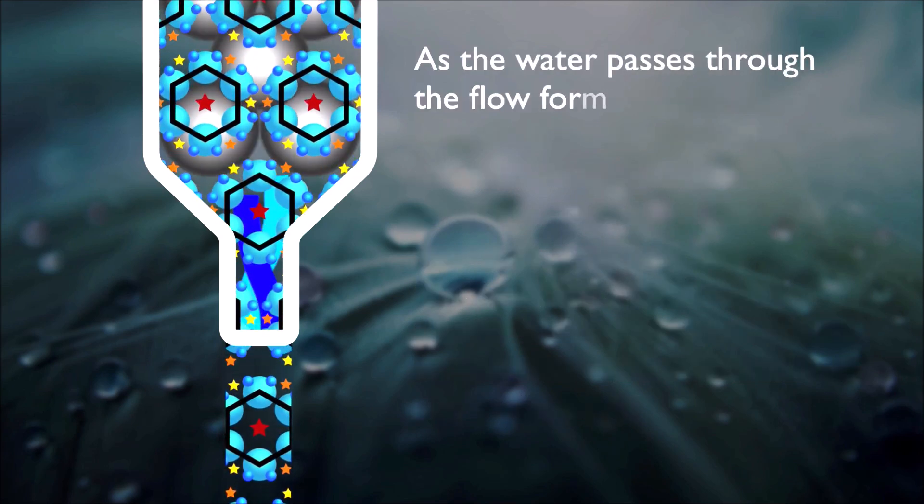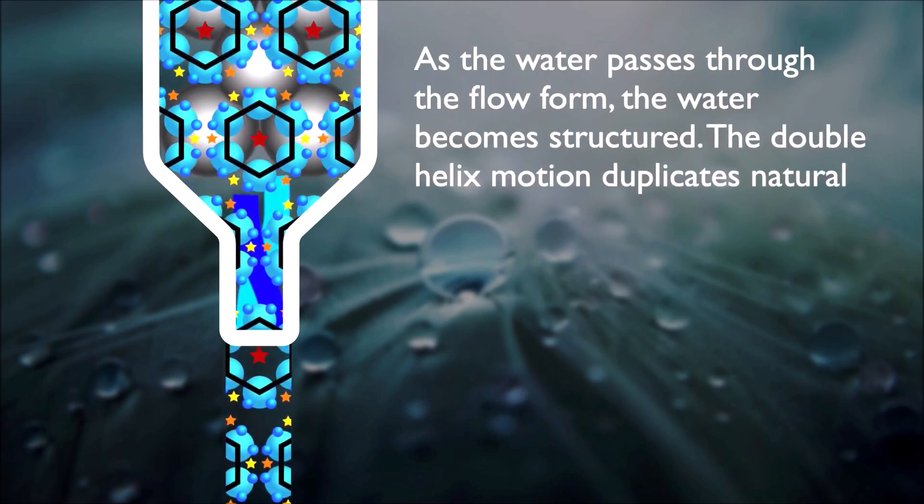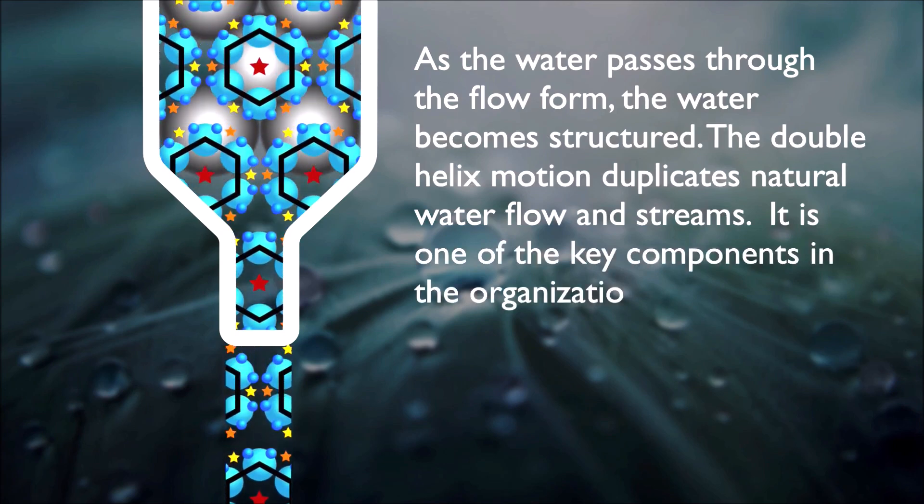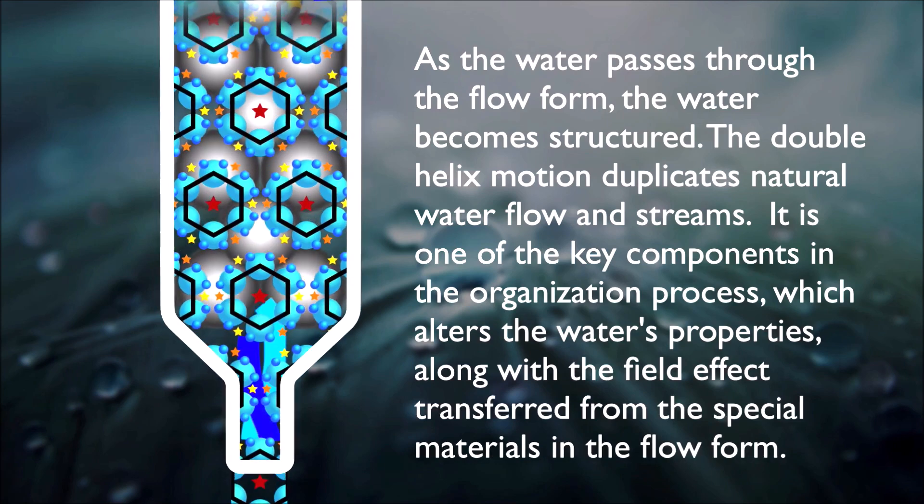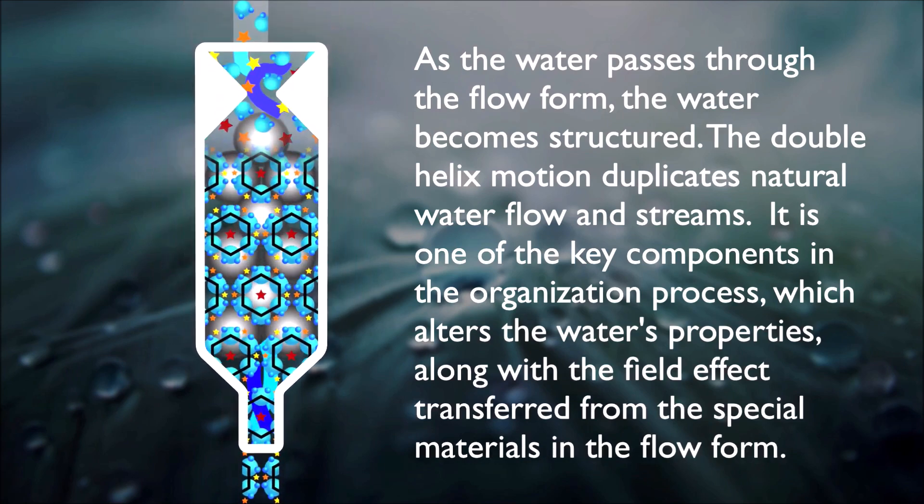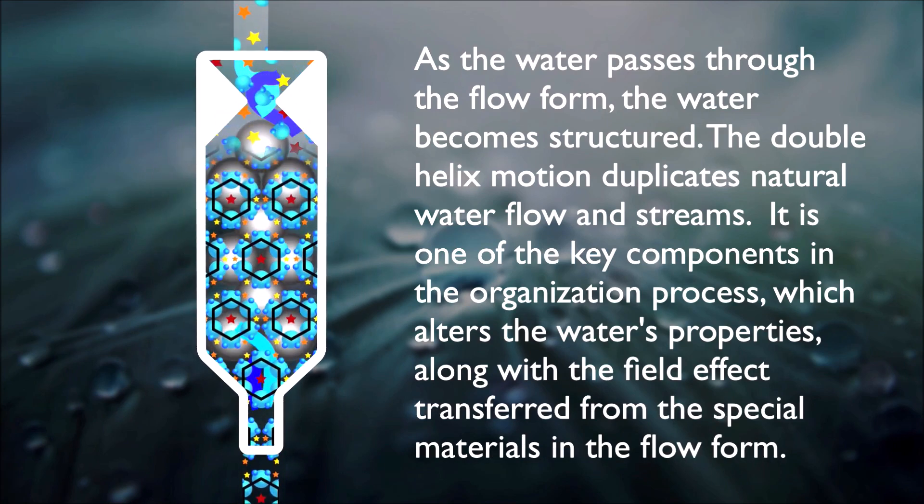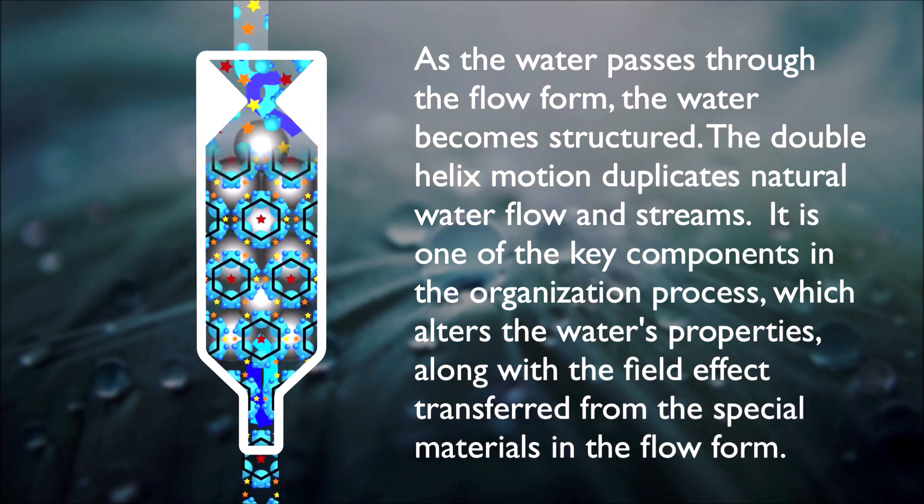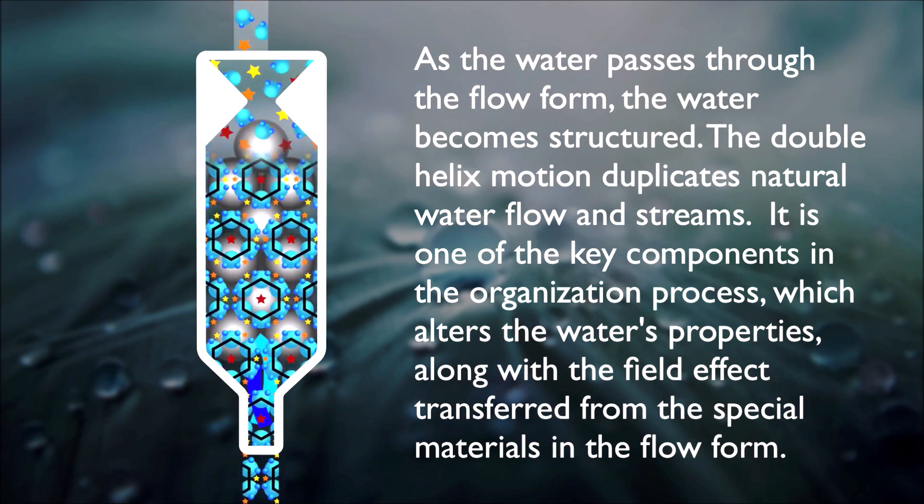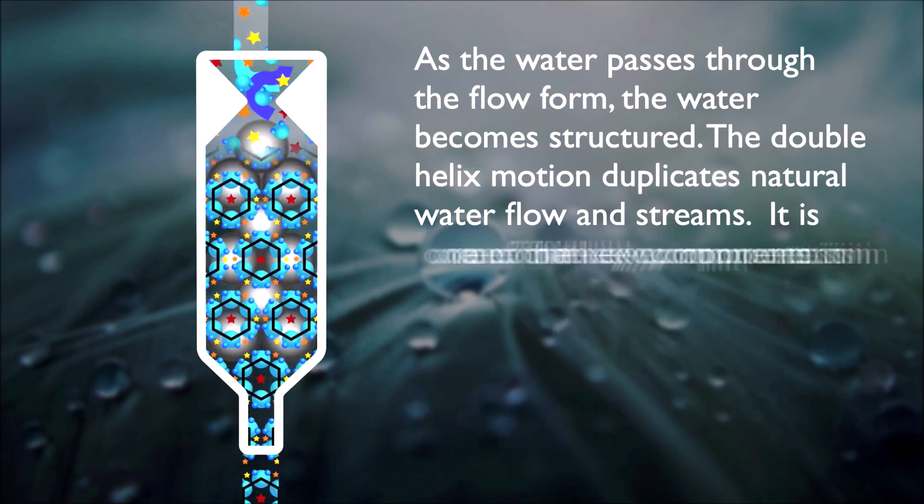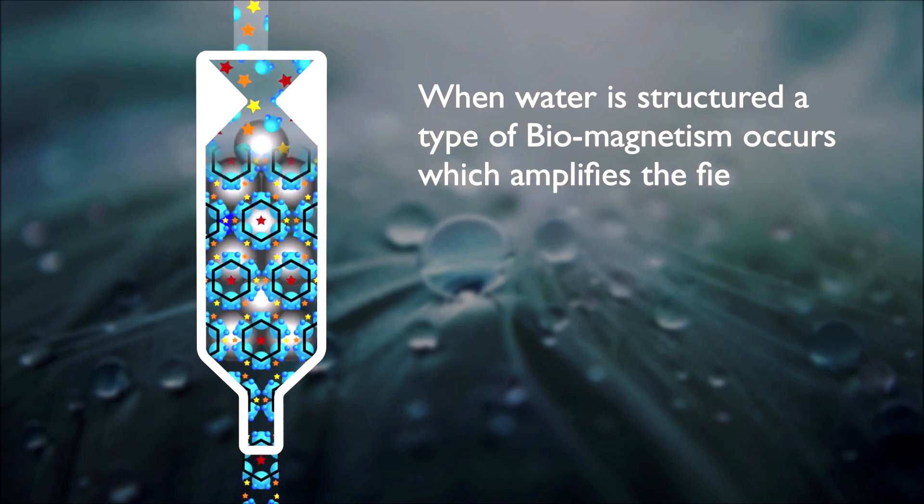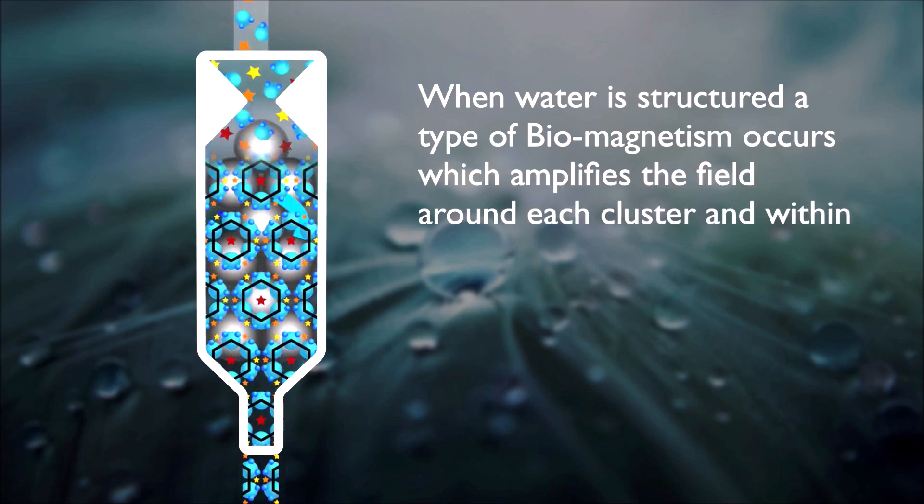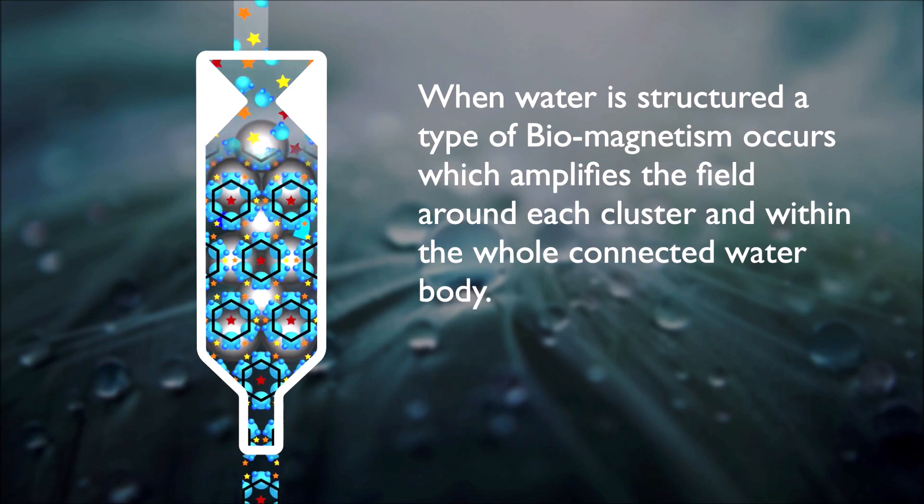As the water passes through the flow form, the water becomes structured. The double helix motion duplicates natural water flow in streams. It is one of the key components in the organization process, which alters the water's properties, along with the field effect transferred from the special materials in the flow form. When water is structured, a type of biomagnetism occurs, which amplifies the field around each cluster and within the whole connected water body.